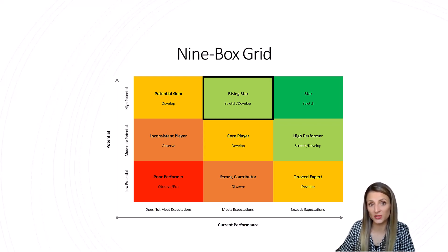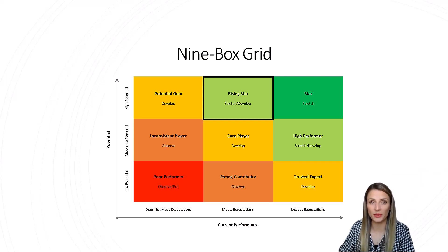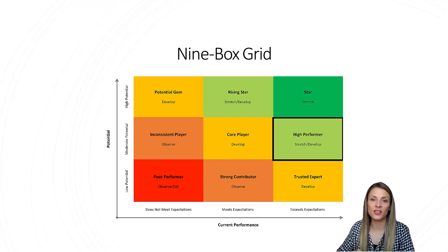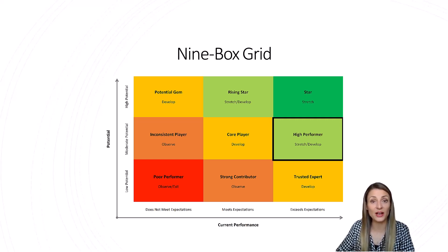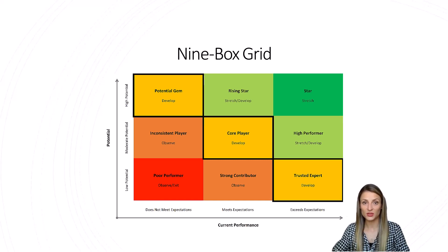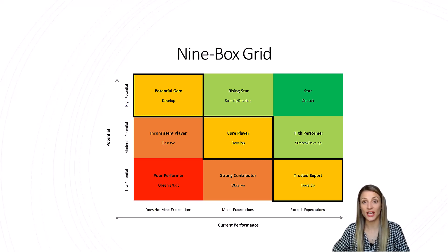In the light green boxes, we have rising stars who have high potential but moderate performance. And then in the other light green box, we have high performers who have some improvements to make in their promotability, but they do their job and they do it well. Employees in the yellow boxes should be monitored for improvements in their performance and promotability, and invited to development opportunities next.